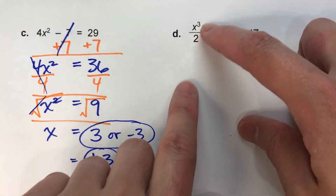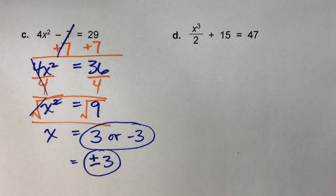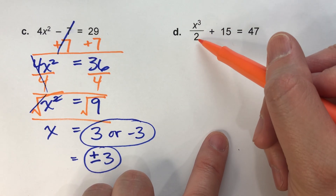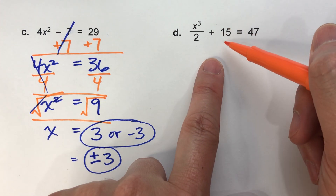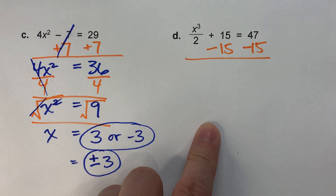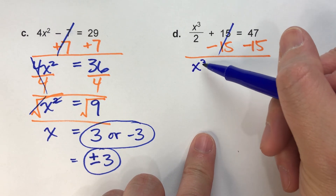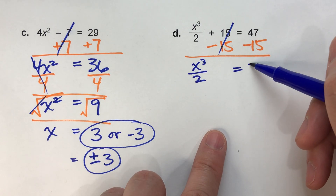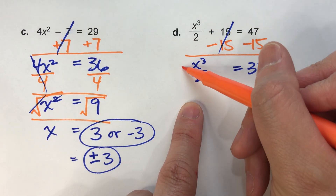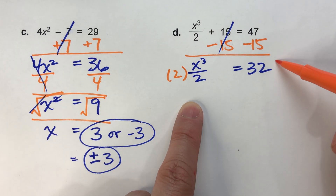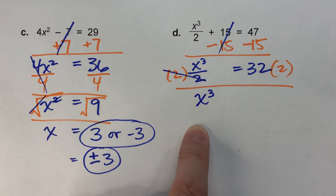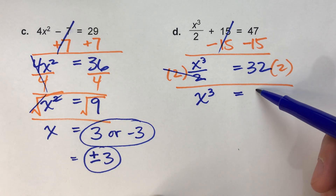Let's try the last one — this one has x to the third power, so right away we know it will have only one answer. Here's what was done to x: raised to the third power, then divided by 2, then added 15 to get 47. Adding 15 was last, so we undo it first — subtract 15 from both sides. The 15s undo each other, x cubed over 2 drops down, and this side equals 32. Next we undo the divide by 2 by multiplying both sides by 2 — multiplying and dividing by 2 undo each other, leaving x cubed, and 32 times 2 is 64.